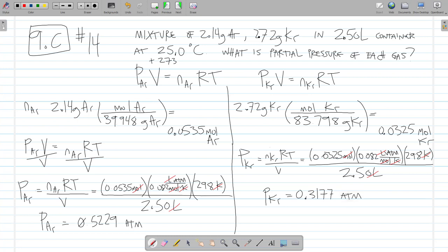All right. So, now I've determined the pressure of both gases individually in the mixture, the partial pressure. And remember the total pressure is just the sum of the partial pressures. P argon plus P krypton. So, the total pressure is 0.5229 plus 0.3177.